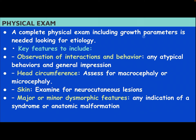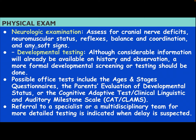Physical examination: a complete physical exam including growth parameters is needed, looking for etiology. Key features include observation of interaction and behavior, any atypical behaviors and general impression. Head circumference: assess for macrocephaly or microcephaly. Skin: examine for neurocutaneous lesions, major or minor dysmorphic features, any indication of syndrome or anatomical malformation. Neurological examination: assess for cranial nerve deficits, neuromuscular status, reflexes, balance and coordination, and any soft signs.